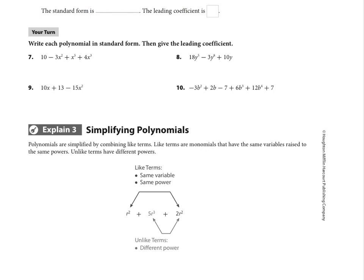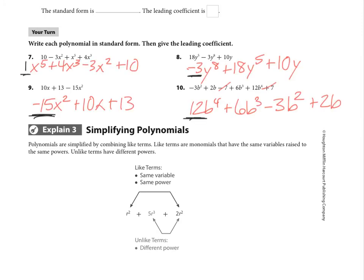Try writing each of these in standard form and identify the leading coefficient — pause the video if needed. The answers: standard form is x to the fifth, 4x³, minus 3x², plus 10 — pay attention to signs, keep them on the coefficients. The leading coefficient is one, even though it's not written. On number 10, note that negative seven and positive seven cancel because they are like terms.